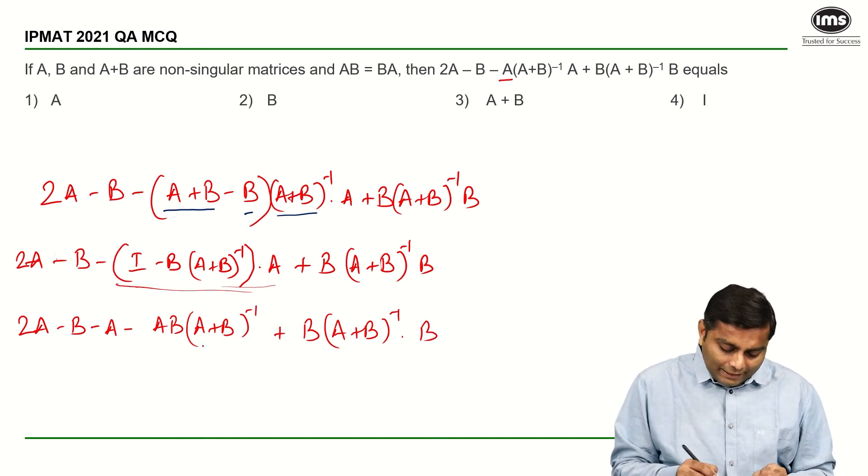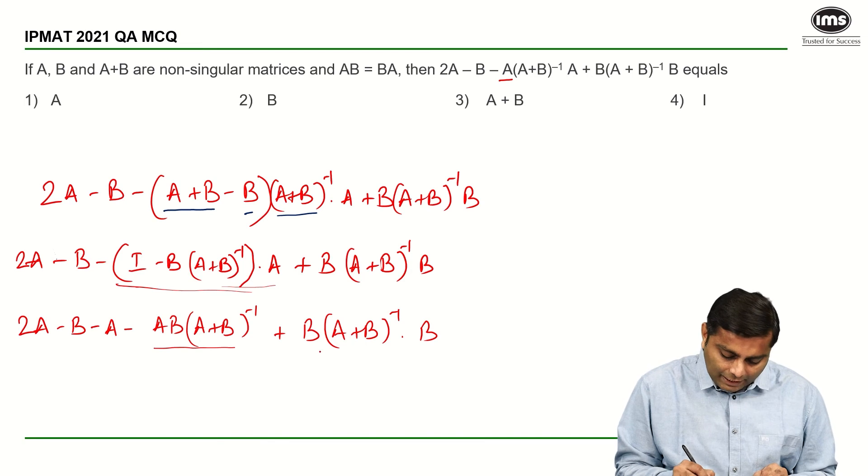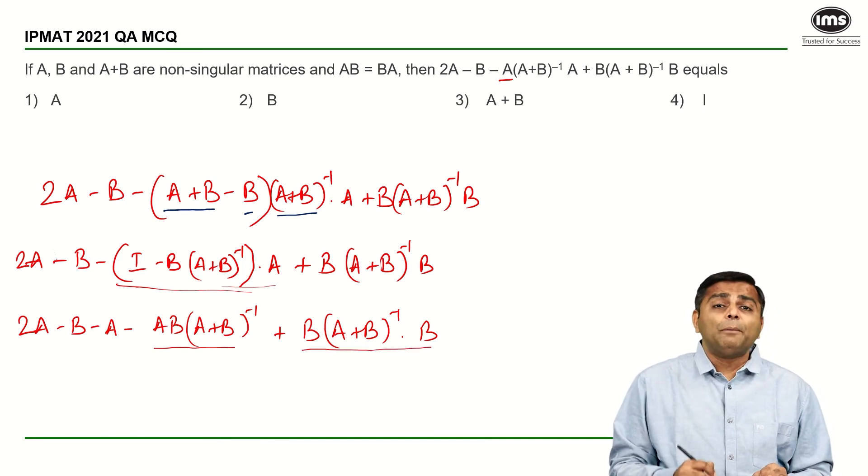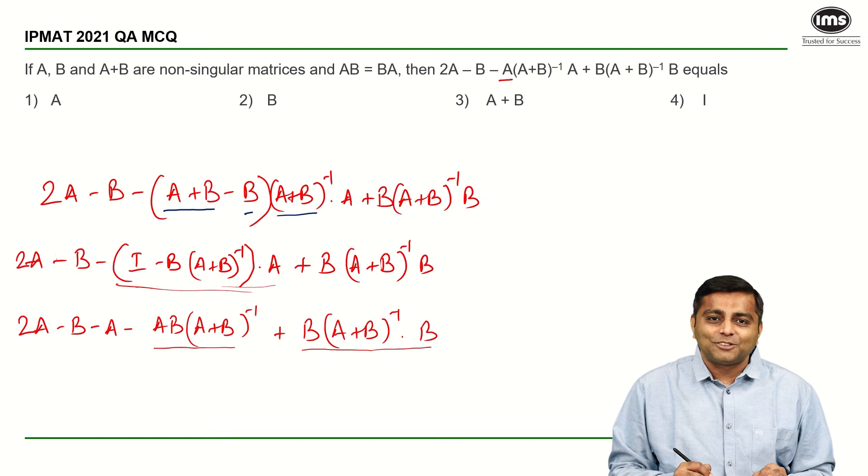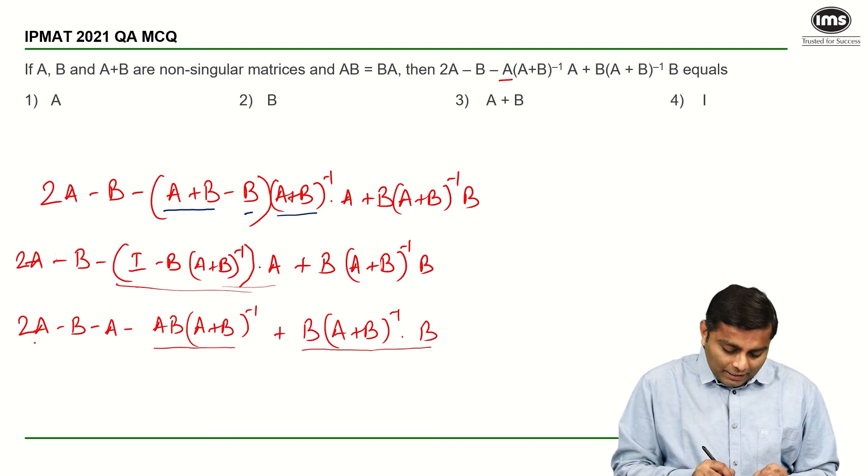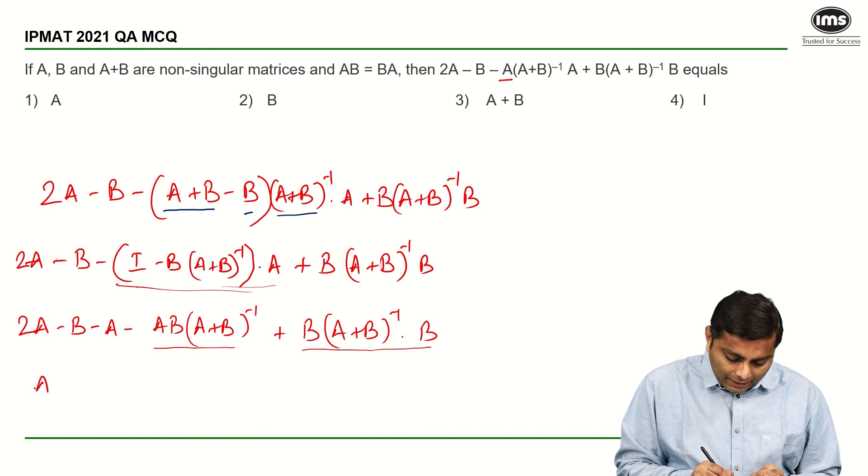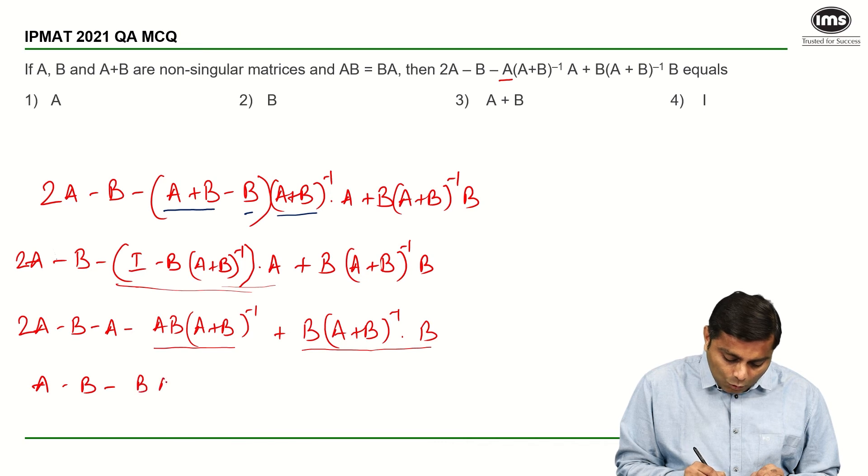Now, if you look at these two terms carefully, we know that B into A plus B inverse is common. So, let us take that out common, also we can just simplify this term 2A minus A will become A. So, A minus B minus, I am going to say B into A plus B inverse outside.